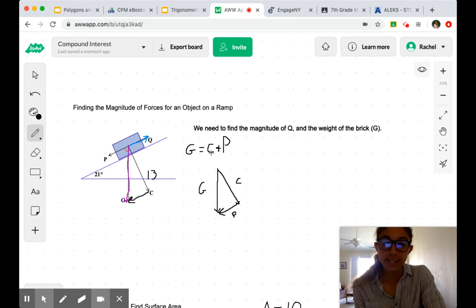And that gives us that C plus P equals G, right? When we add vectors, we take the initial point of one and put it at the terminal point of another.